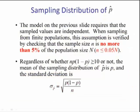The model on the previous slide requires that the sampling values are independent. When sampling from finite populations, this assumption is verified by checking that the sample size n is no more than 5% of the population size. Regardless of whether n times p times 1 minus p is greater than or equal to 10 or not, the mean of the sampling distribution of p hat is p, and the standard deviation is the square root of p times 1 minus p divided by n.